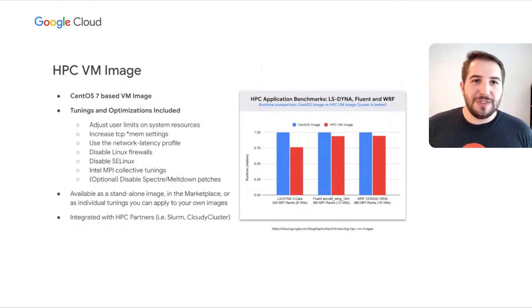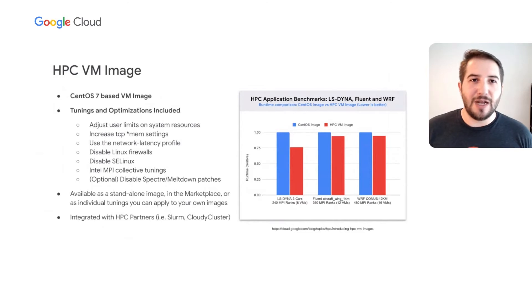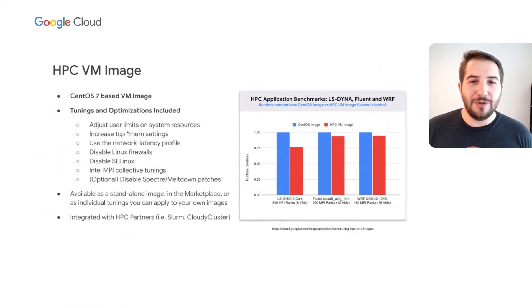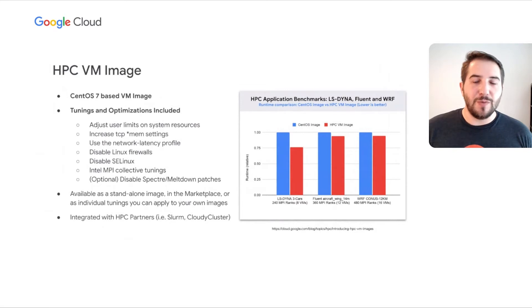Let's dive into some of the most important recent changes to our HPC platform. The HPC VM image is a CentOS 7-based image with a number of tunings and optimizations built directly in — including adjustments to user limits, network tunings, disabling the Linux firewall and SELinux, Intel MPI collective tunings, and an easy way to disable Spectre/Meltdown patches if desired. We saw significant improvements relative to vanilla CentOS 7 on common HPC applications like LSDyna, Fluent, and WRF — most notably reducing LSDyna's three-car crash model to about three-quarters of the vanilla image runtime.